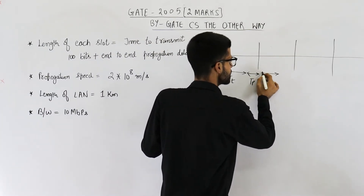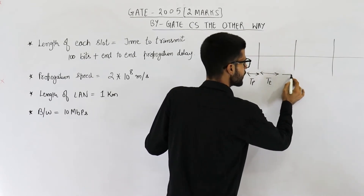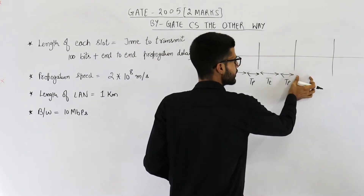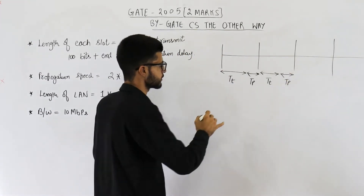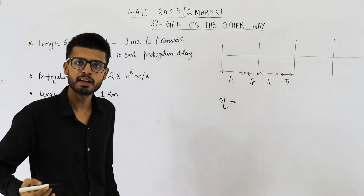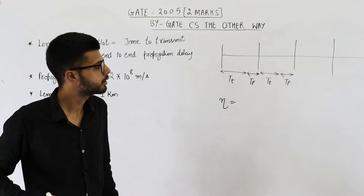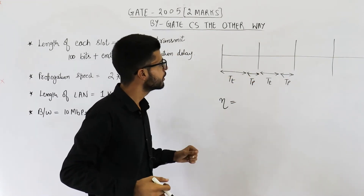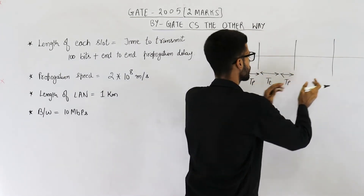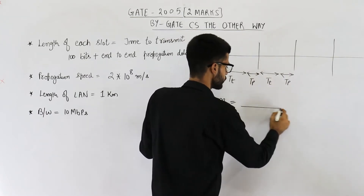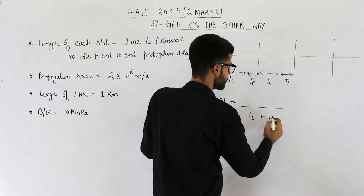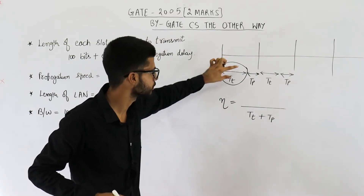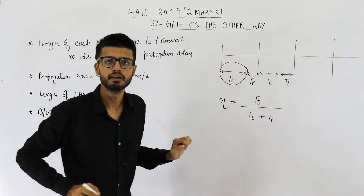The next station is given some time to transmit its data, and again we wait for TP time so that its last bit also gets out of the channel. Similarly, you will have TT plus TP here also. What is the efficiency in this case? Efficiency will be useful time divided by cycle time. Useful time is TT. Cycle time is TT plus TP, because we are repeating TT plus TP again and again. Out of this, a station is actively sending data only for the transmission time TT. So useful time is TT.